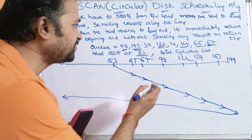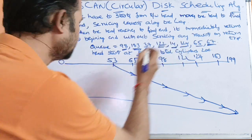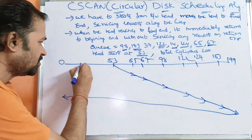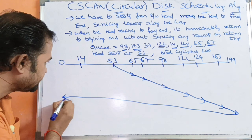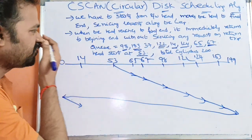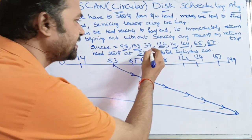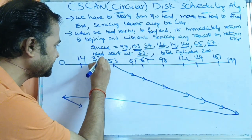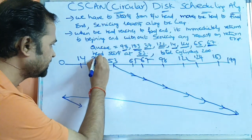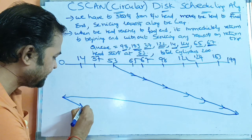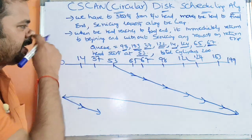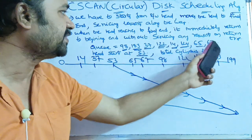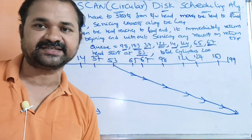Now we process the remaining requests from 0 to 53. Here we have 14, so first we access the data at cylinder 14. After that, the next cylinder is 37, so we access the data at cylinder 37. All the requests in the queue are now serviced.